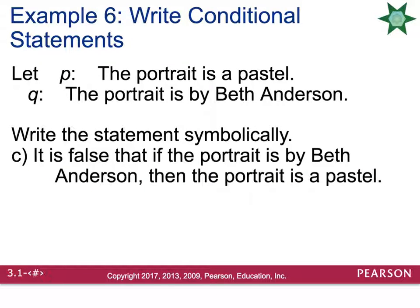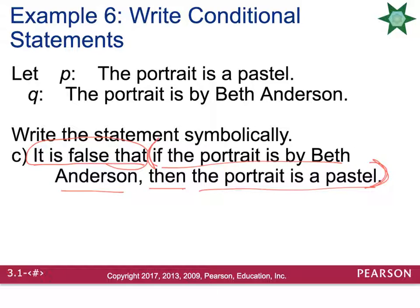'It is false that if the portrait is by Beth Anderson, then the portrait is a pastel' uses a negation over the entire conditional. We write ~(Q → P): the negation symbol followed by parentheses containing Q → P.